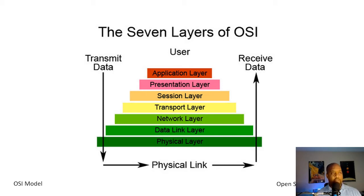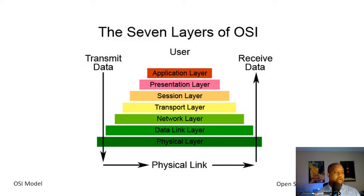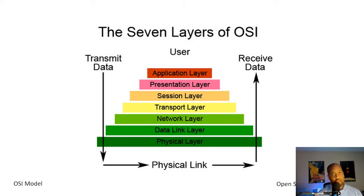There are seven layers: Application, Presentation, Session, Transport, Network, Data Link, Physical. Looking at the diagram, layer one is at the bottom and layer seven is at the top. Each layer has what are called Protocol Data Units, or PDUs — the method of how data is moved at each layer. The router operates at the Network layer, layer three, and the PDU there is a packet or datagram. The layer below that is the Data Link layer, which is where your switch operates — layer two.